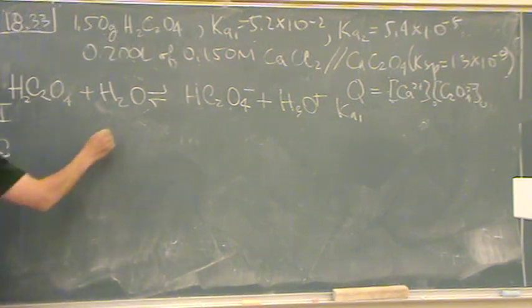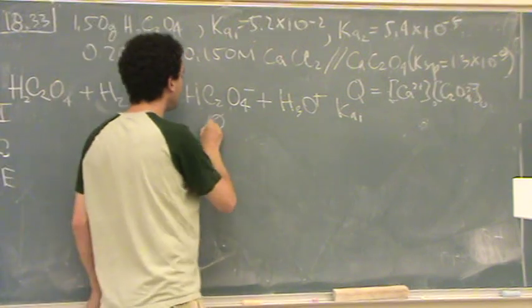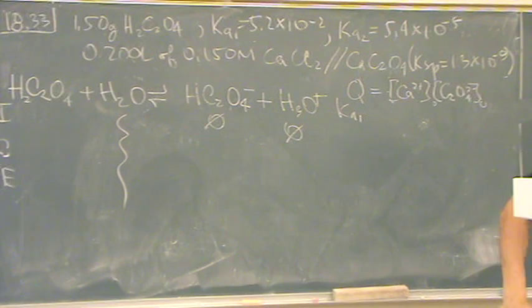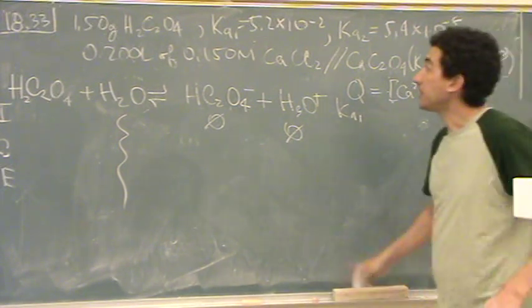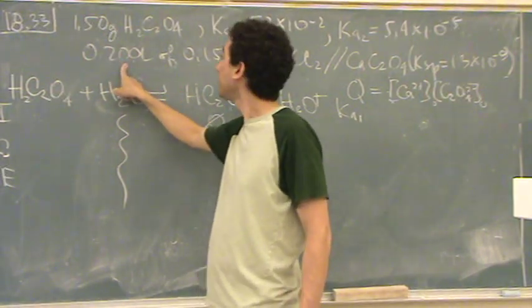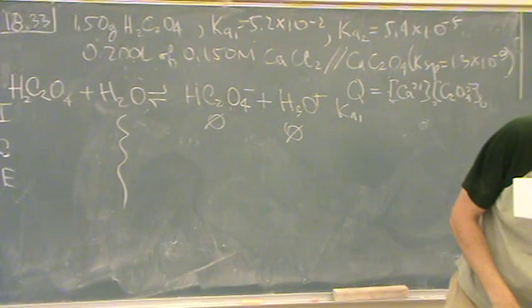And then water, we ignore, zero and zero. And the concentration of the oxalate is going to be 1.5 grams, and it tells us there's 0.2 liters, or 200 mL, 0.2 liters.